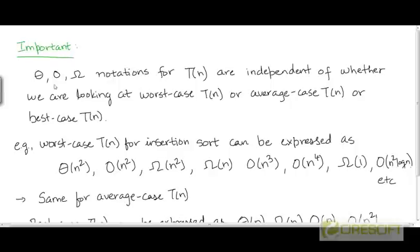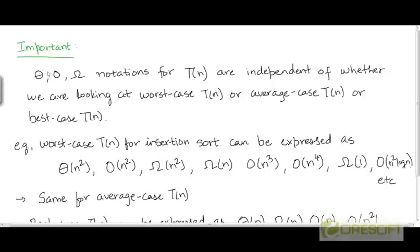Having gone through the theta, big O, and big omega notations for representing a function t, there is one important point we need to note: these asymptotic notations are independent of whether the function t is the worst case, average case, or best case running time. It is not the case that big O notation can only be used to represent the worst case time because it is an upper bound — that fact has nothing to do with t being the worst case running time.